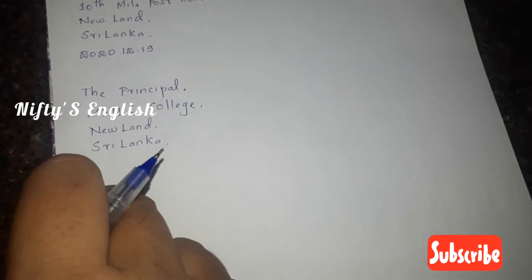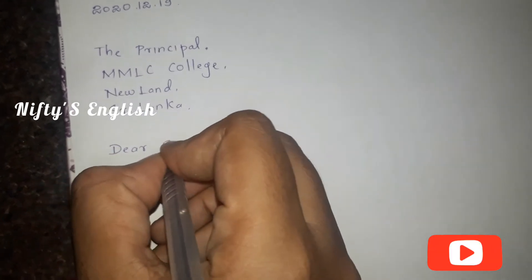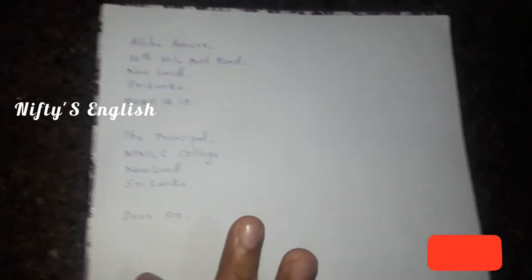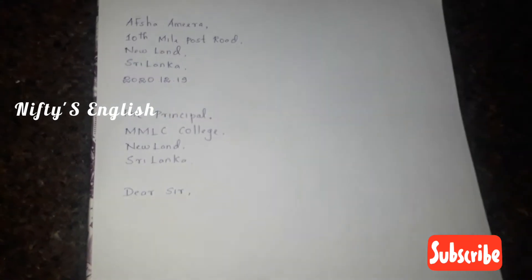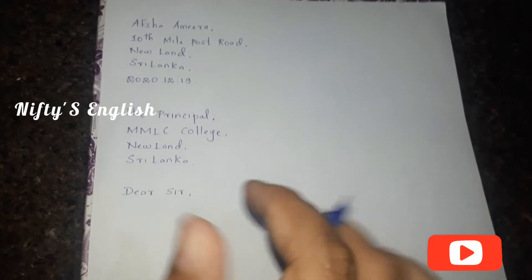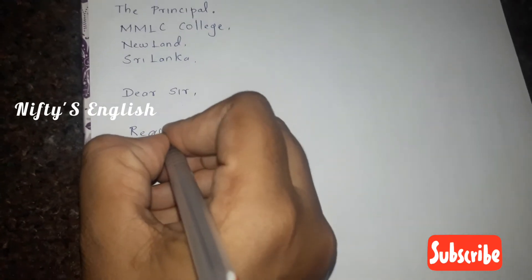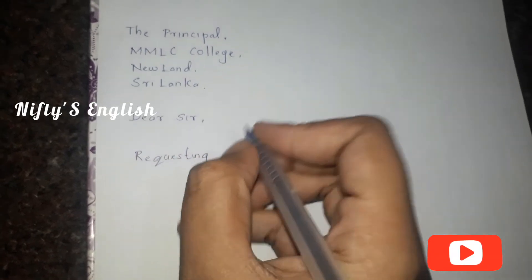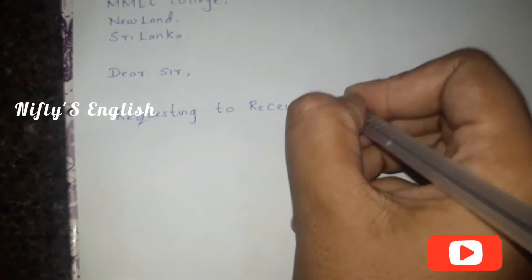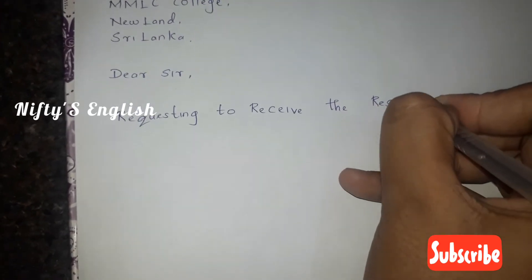The fourth one is the salutation — I put 'Dear Sir.' The fifth one is the heading, which is a major difference in formal letters. In formal letters, a subject heading must be written in one line. I write the heading: 'Requesting to receive the result sheet,' as I am asking for the result sheet.